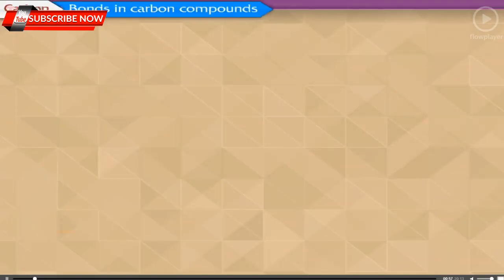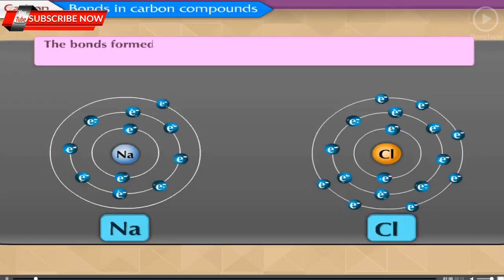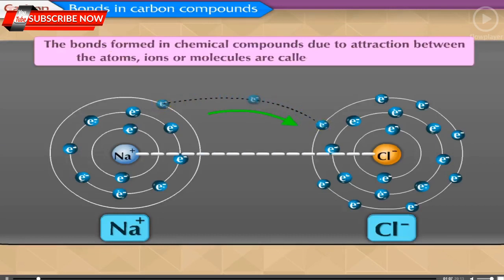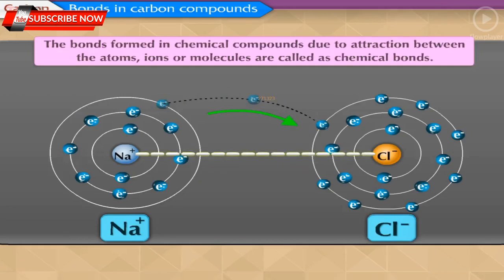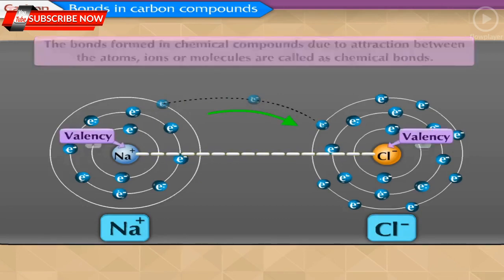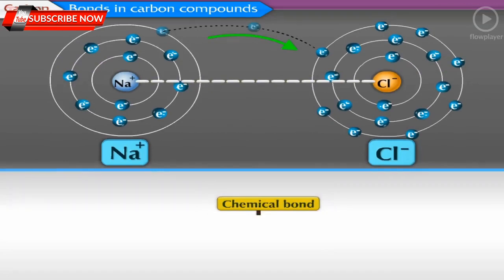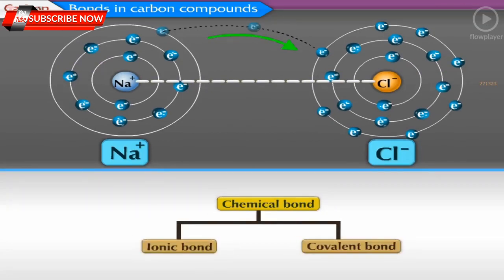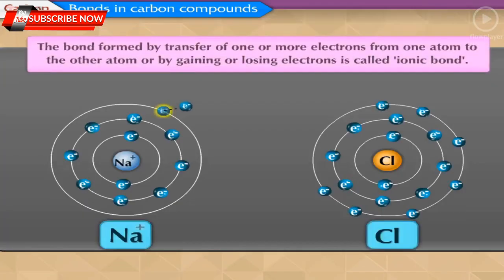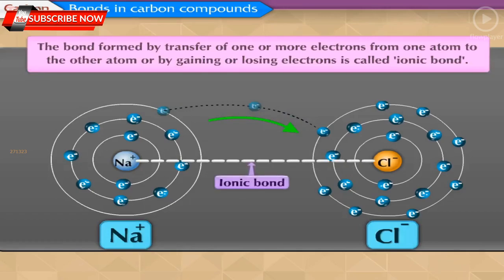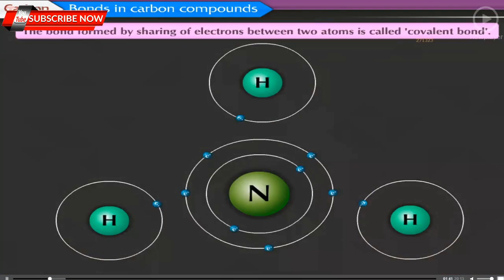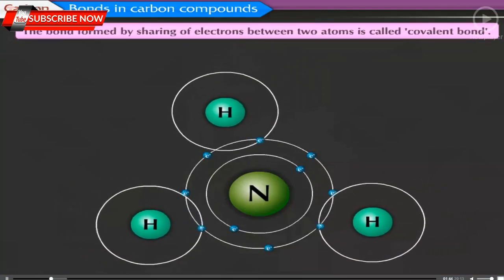Bonds in Carbon Compounds: The bonds formed in chemical compounds due to attraction between atoms, ions, or molecules are called chemical bonds. The number of chemical bonds formed by an atom of an element is called valency. There are two important types of chemical bonds: ionic bond and covalent bond. The bond formed by transfer of electrons from one atom to another is called an ionic bond, while the bond formed by sharing of electrons between two atoms is called a covalent bond.